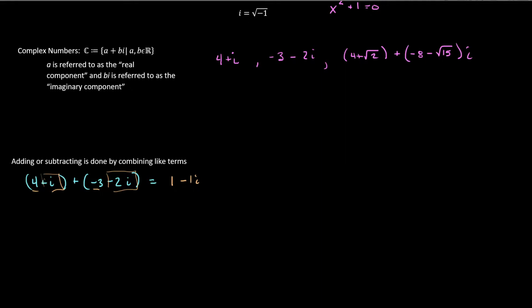And then traditionally, if it's a 1 in front of the variable, in this case it's not a variable but a letter, we just simply write it as 1 minus i. And so be it. That's it. That's the answer. So it's really not that bad.